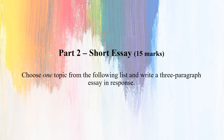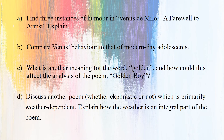Part 2: Short Essay, fifteen marks. Choose one topic from the following list and write a three-paragraph essay in response. Topic A: Find three instances of humor in Venus de Milo, A Farewell to Arms. Explain. Topic B: Compare Venus' behavior to that of modern-day adolescence. Topic C: What is another meaning for the word golden, and how could this affect the analysis of the poem Golden Boy? Topic D: Discuss another poem, whether ekphrastic or not, which is primarily weather-dependent. Explain how the weather is an integral part of the poem.